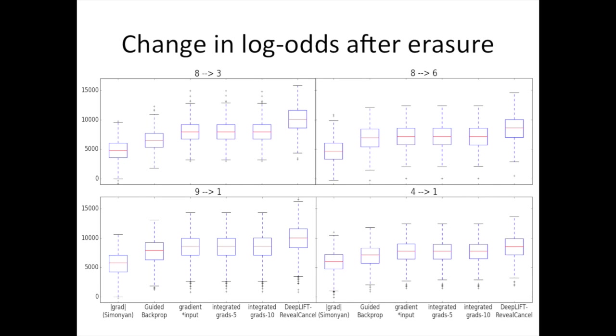As you can see, DeepLIFT with the reveal-cancel rule consistently performs the best. Also note that integrated gradients performs comparably to gradient times input, which suggests that saturation and thresholding relationships are not especially prominent on MNIST data. And if you're curious, DeepLIFT using the rescale rule on all the layers also performs comparably to gradient times input and integrated gradients.